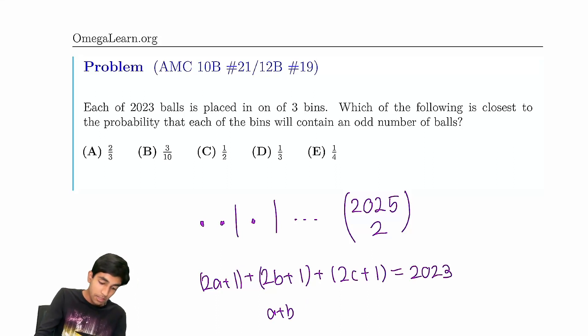And this whole thing must be equal to 2023. So therefore, a+b+c has to be equal to 1010. And a can be zero. For example, a can be zero and then it would just have one ball. A could be one, it would have three balls, and so on.